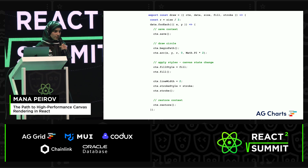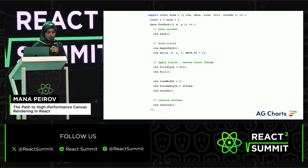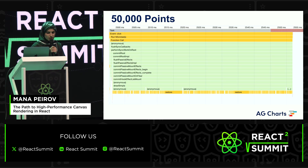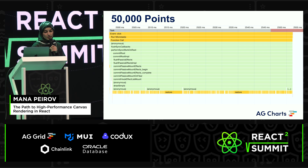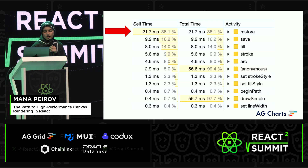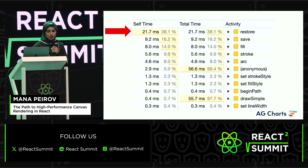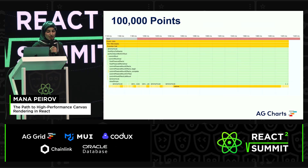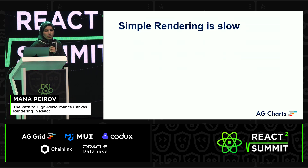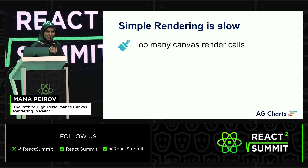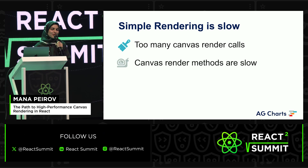That was obviously slow based on my interactions with the app. Looking at the performance profile, you can see a big chunk of the execution time is spent in the Canvas rendering methods — specifically a lot of time in Canvas restore. The bottom-up profile shows it took about 56 milliseconds to render 50,000 data points. For 100,000 data points, it's even worse, taking around 300 milliseconds. It's slow because there are too many Canvas render calls, and Canvas rendering has its limits.